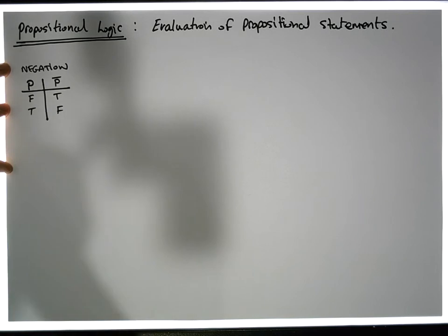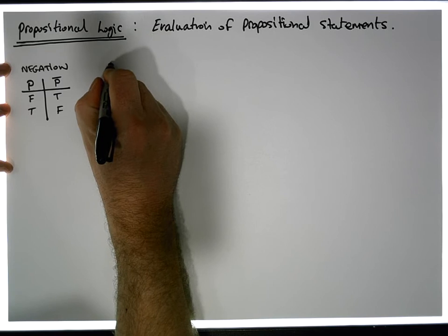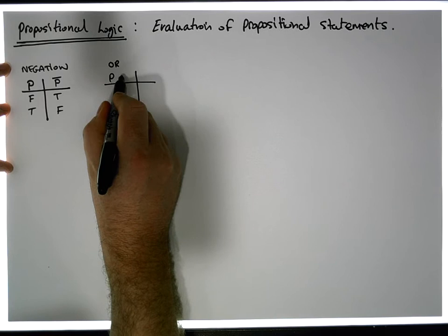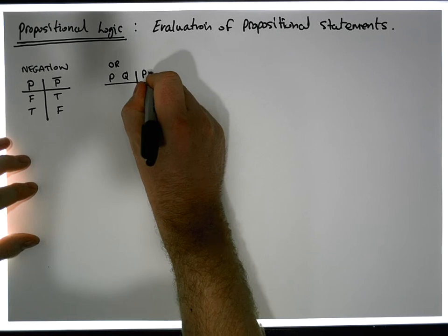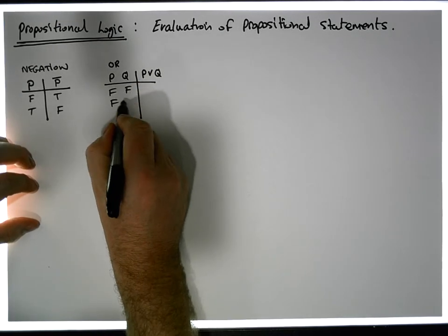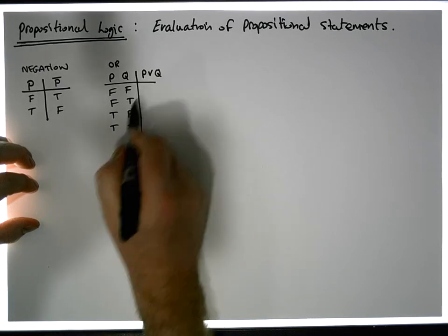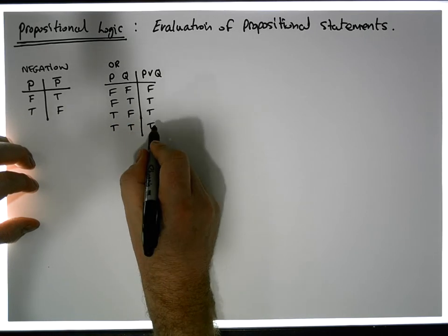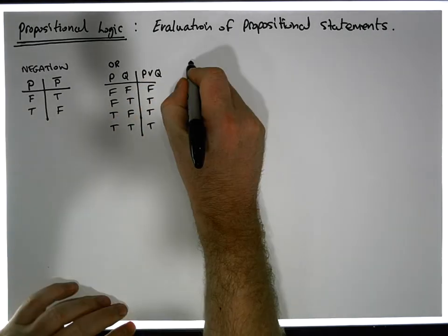Negation is symbolized by P-bar. When the proposition is false, its negation becomes true; when it's true, it becomes false. That's our first operator — the bar operator. We also have the OR operator, which takes two propositions P and Q as input. OR is only ever false when both inputs are simultaneously false; everywhere else it's true.